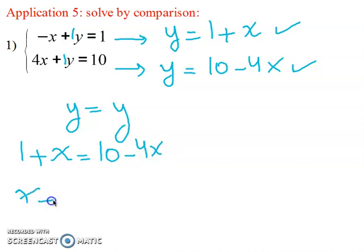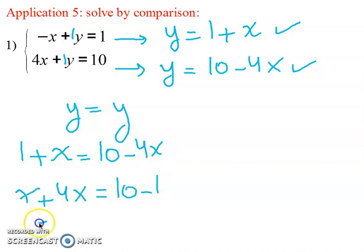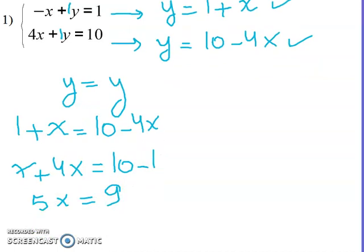Solving: x plus four x equal ten minus one, so five x equal nine, therefore x equal nine over five.